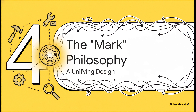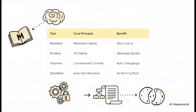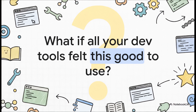We've looked at four separate tools, but they're all tied together by a really powerful, unifying philosophy. Each tool takes a core open standard and uses it to solve a very specific problem. Backmark uses Markdown, so you're never locked in. EnvyMark uses Git to give you version control for your secrets. Shipmark uses conventional commits to automate your changelogs. And Stackmark uses smart port allocation to kill port conflicts. See the pattern? These tools don't try to reinvent the wheel — they just make it spin a whole lot better. This whole suite is proof of what's possible when tools are designed with real care, focused on the developer experience, and built on simple, open ideas. Why shouldn't all your tools feel this good to use? Thanks for tuning in.